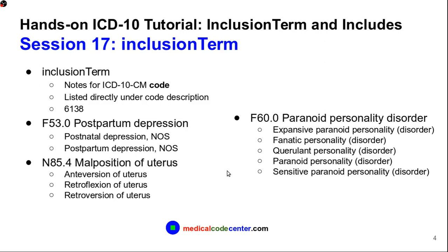Now let's look at Inclusion Terms. Inclusion Terms are basically coding notes for ICD-10-CM codes, and they are usually listed directly under the code description. For the 2019 version of ICD-10-CM, we have around 6,000 Inclusion Terms. Next, I will go through three examples of Inclusion Terms for three codes, so please open your ICD-10-CM book to follow along.